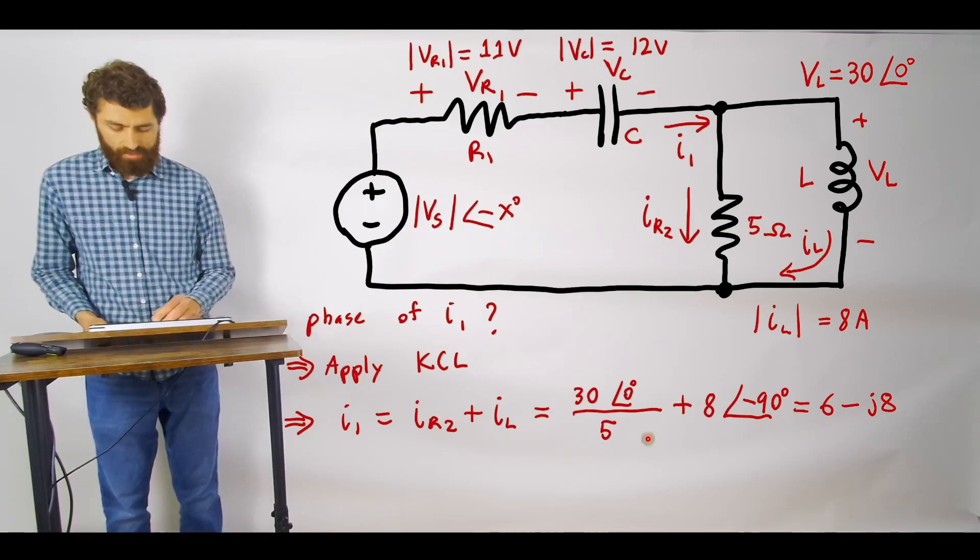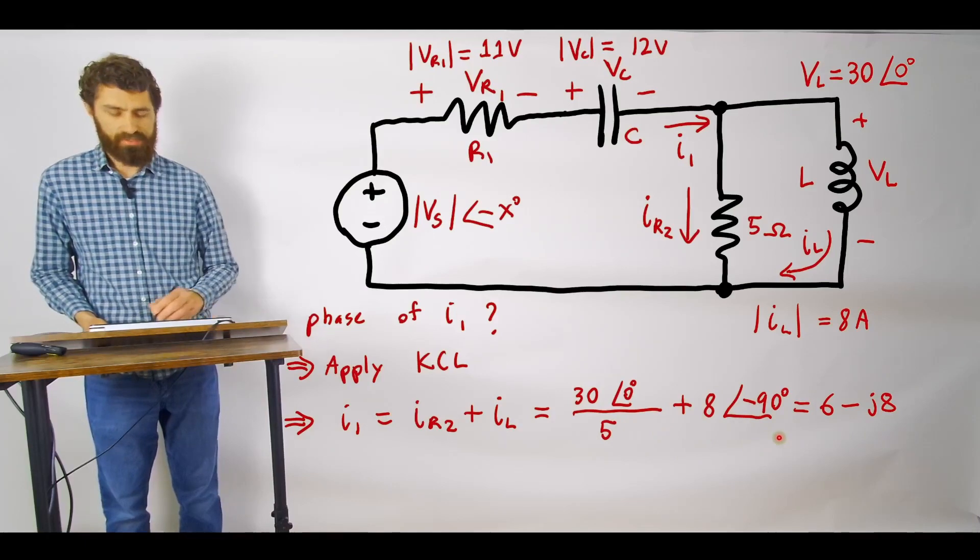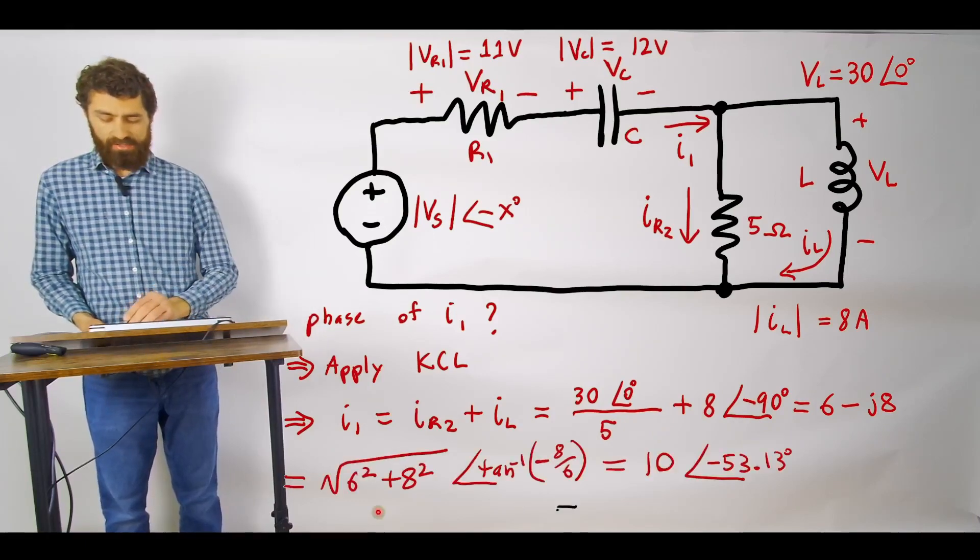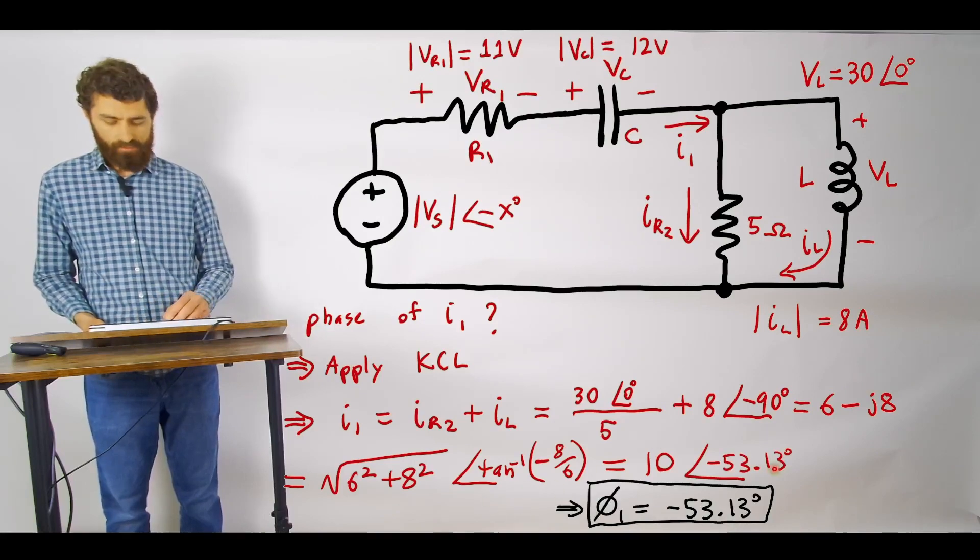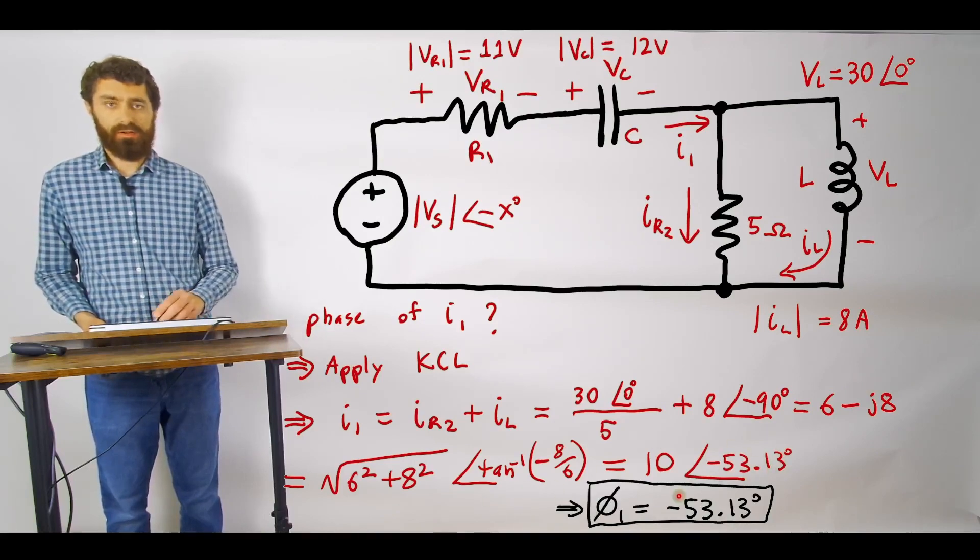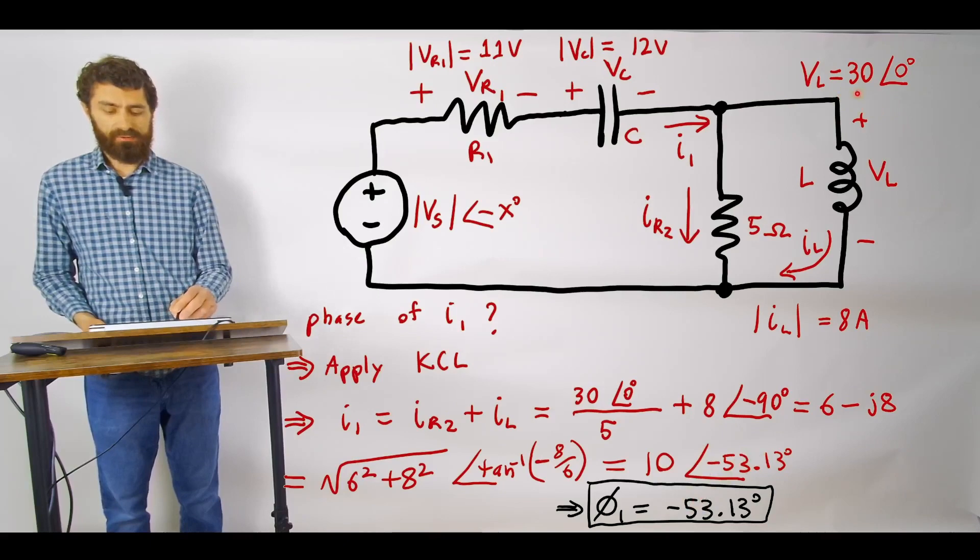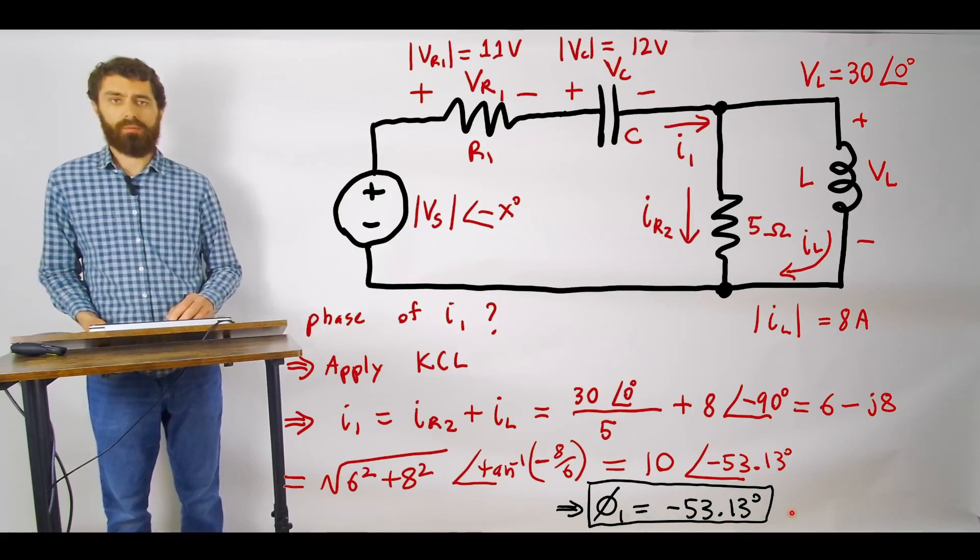So then you can go ahead and just simplify this math and you get 6 minus j8 and we can then convert that into polar form here and I converted this value to degrees here. And so the phase angle of your current I1 is the phase angle relative to this because we set this equal to 0 degrees. So that's our answer for the first part of the problem.